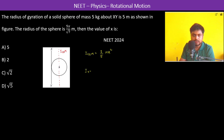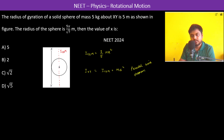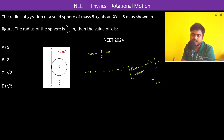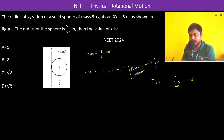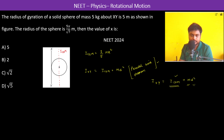I about XY will be I_cm plus md², due to the parallel axis theorem, which states that the moment of inertia about an axis XY equals the moment of inertia about the center of mass plus the total mass times the square of the parallel distance between both axes. So I_cm is 2/5 mr².